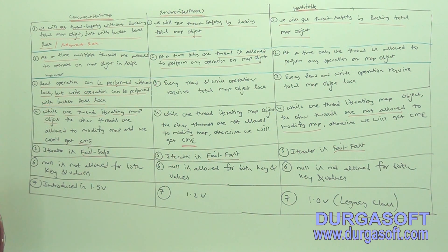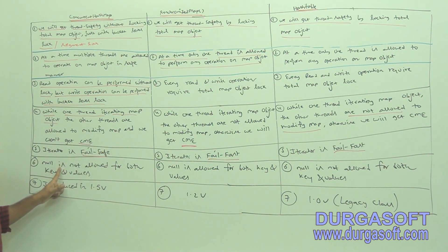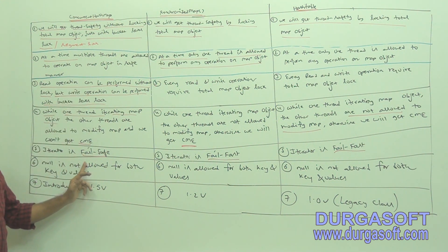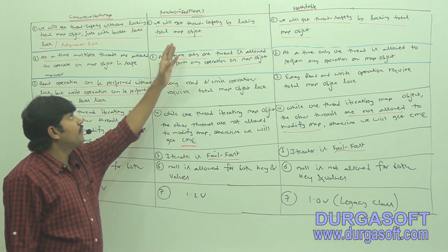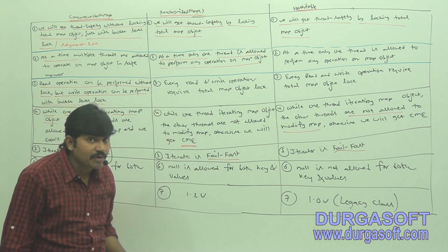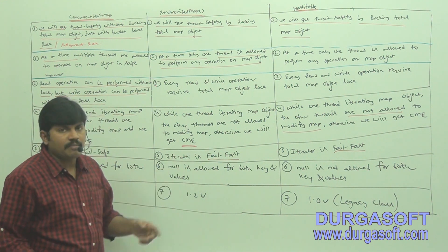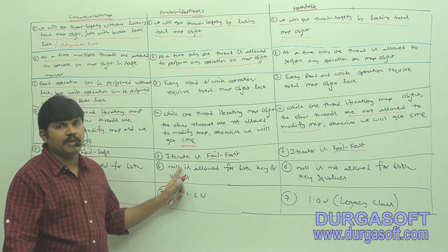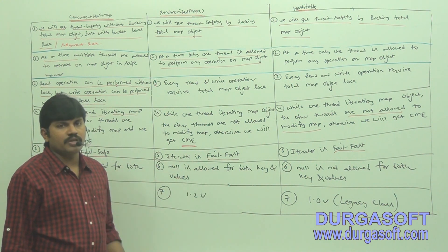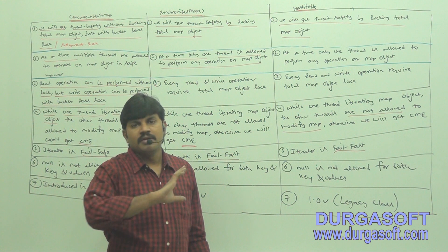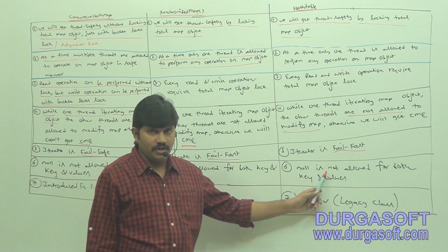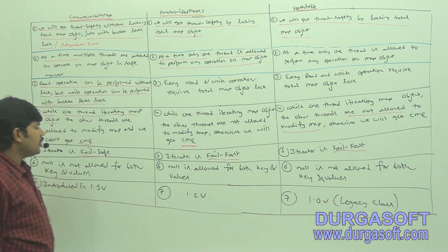Next: null is not allowed for both key and values in ConcurrentHashMap. But null is allowed for both key and values in SynchronizedMap, just as in HashMap. For HashTable, null is also not allowed for both key and values.